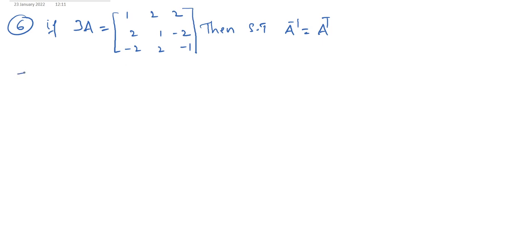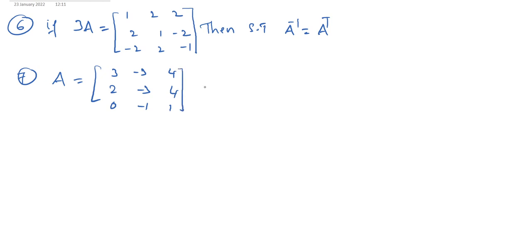Seventh question: if capital A is equal to [3, −3, 4; 2, −3, 4; 0, −1, 1], then show that A inverse is equal to A³.